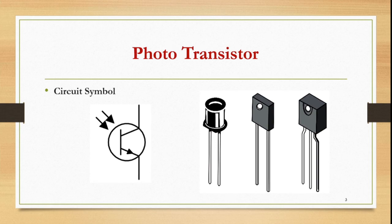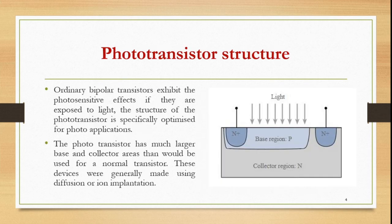Light will fall onto the base, and according to the equation IE = IB + IC, the base current leads to a collector current as well as an emitter current.